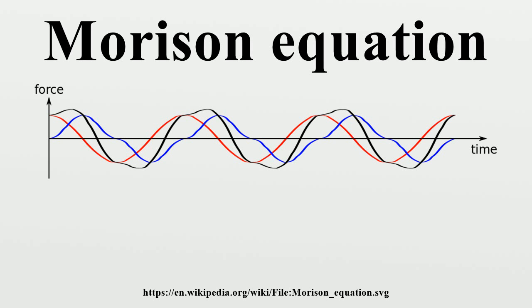The Morrison equation is the sum of two force components: an inertia force in phase with the local flow acceleration and a drag force proportional to the square of the instantaneous flow velocity.